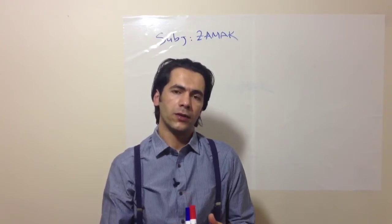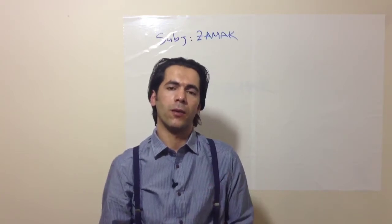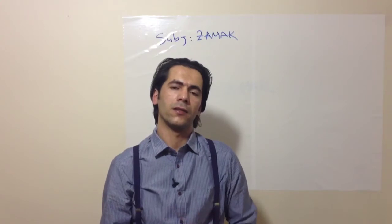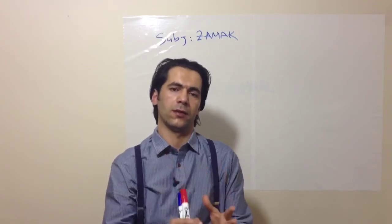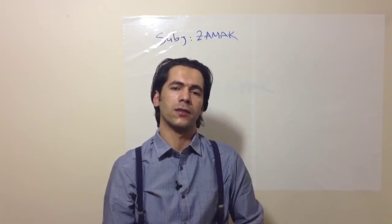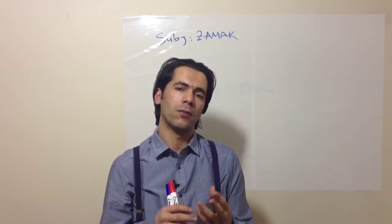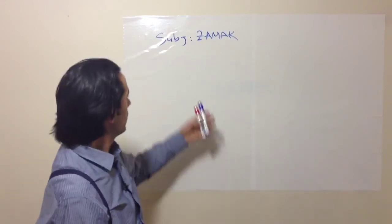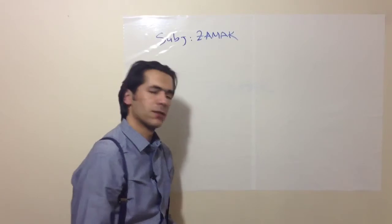ZAMAK is distinguished from other zinc alloys by its 4% aluminum content. As you know, zinc by itself doesn't have enough mechanical properties to hold its shape, but at the same time it has very good corrosion resistance. That's why we need aluminum in our alloy. So that's our subject today, ZAMAK.